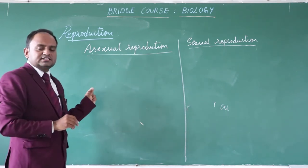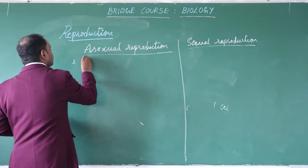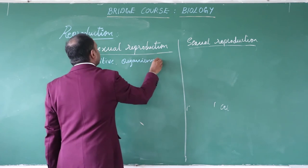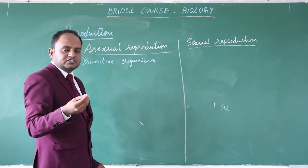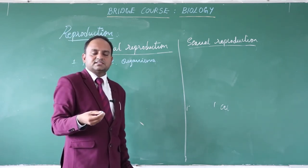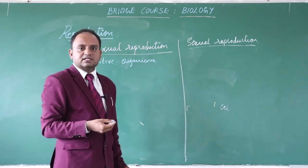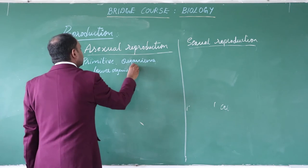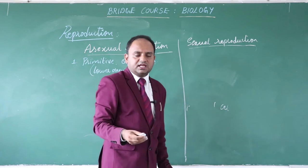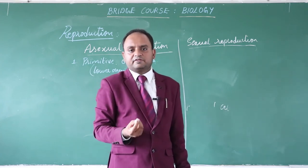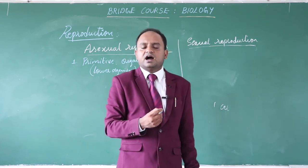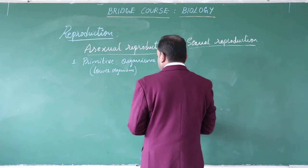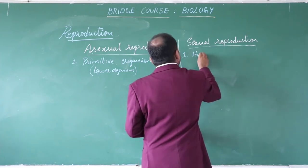Asexual reproduction is seen in primitive organisms — the first and lower-grade organisms to come into existence on Earth. These are mostly unicellular organisms such as bacteria and unicellular algae. Sexual reproduction, on the other hand, is seen in higher organisms — much more evolved forms with higher degrees of organization such as tissue level, organ level, or organ system level.